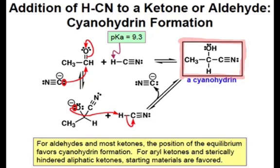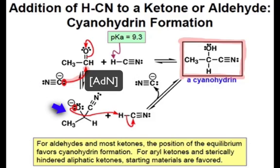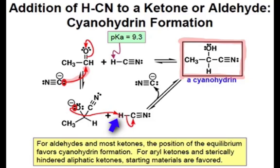Mechanistically, this reaction proceeds in a very similar fashion to the addition reactions we've already seen. In the first step, the nucleophilic cyanide anion adds into the carbonyl group to generate an alkoxide. HCN, which is a weak acid, then donates its proton to the alkoxide to generate the neutral cyanohydrin product.